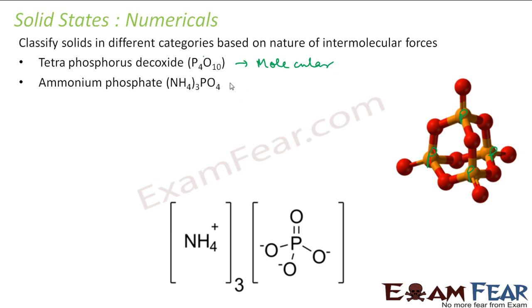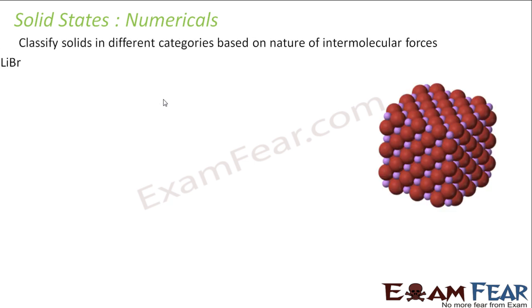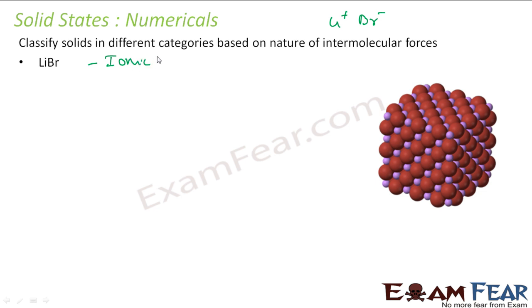Ammonium phosphate has positive and negative ions as its basic building blocks, so it is an ionic solid. Brass is a metal, so it is a metallic solid. LiBr is lithium⁺ with bromide⁻ — since ions are involved, it is also an ionic solid.